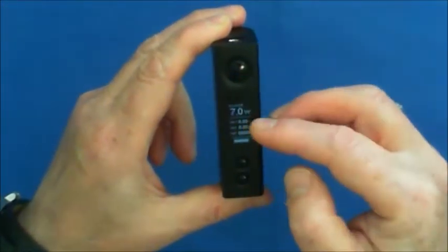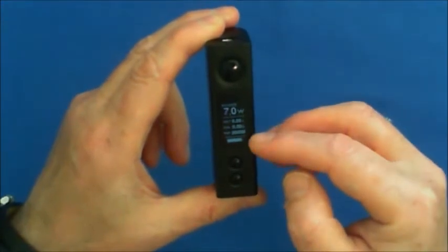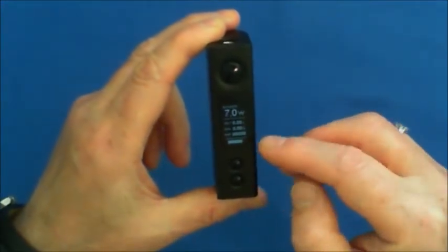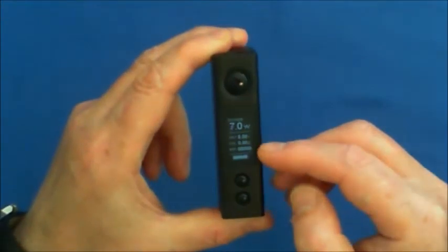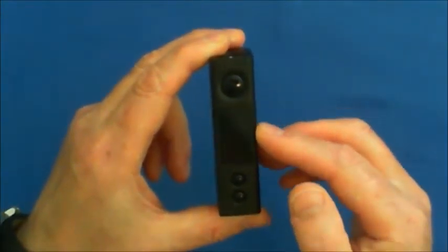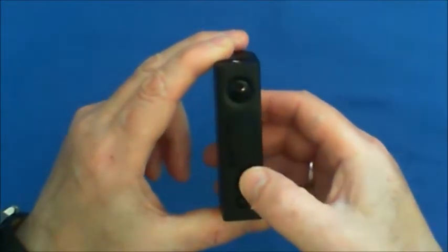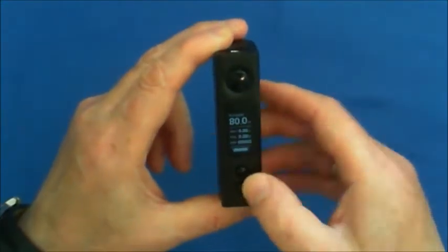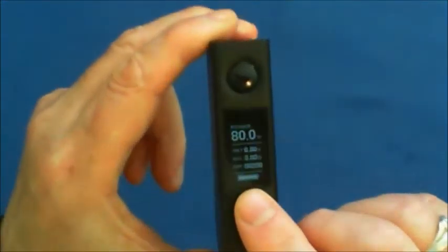When you click on that, when you've got your atomizer on, you get your voltage and you also get how many puffs you've taken with the battery in. You also get how much life is left in the battery here as well.